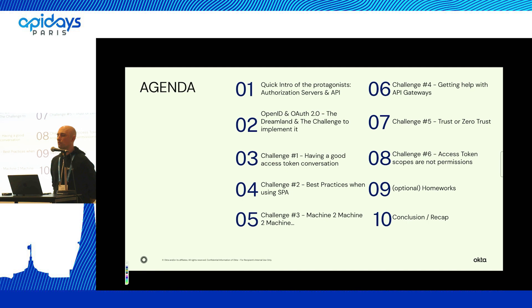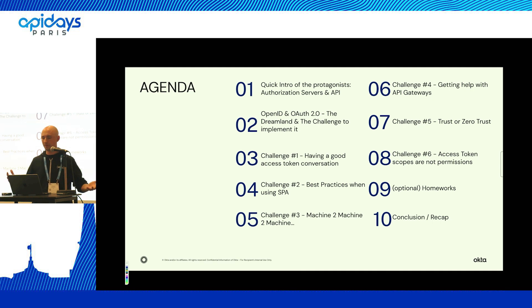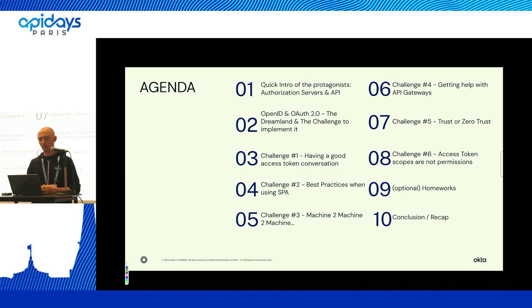The menu for today will be a quick introduction and refresh about what is an authorization server, what is an API, and a refresh on protocols like OpenID and OAuth 2, which are important for today's topic. Then some challenges I've picked up from the field — things that were sometimes debates or pitfalls we try to avoid. Of course, there are more than those on the screen. Feel free to ask more questions at the end or at the booth.